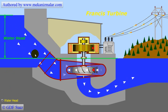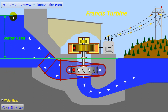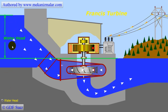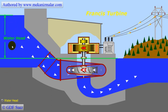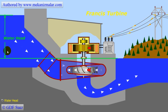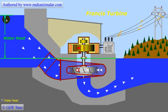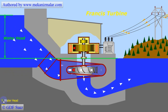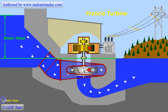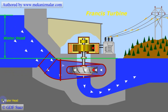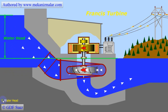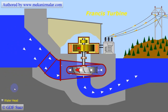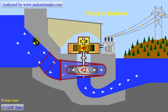The Francis turbine fills a large gap between the Pelton and Kaplan and it is widely used. They operate in water heads from 10 to 600 meters and are primarily used for electric power generation. Their power output can be calculated from the water head and flow rate, and typically ranges from 10 to more than 700 megawatts.